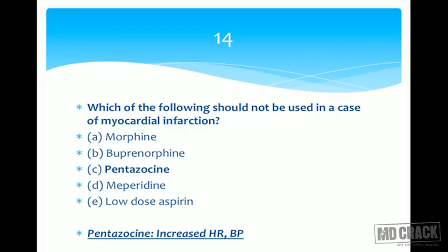Next question: acute intermittent porphyria is a contraindication for which? Options: opioids, benzodiazepines, barbiturates, non-benzodiazepines, and valproic acid. This is a very straightforward, commonly asked question. Barbiturates are inducers of microsomal enzymes, and this is why they can precipitate an attack of acute intermittent porphyria — a very strong contraindication. In your general anesthesia chapter on thiopentone sodium, you will find this listed as a contraindication. Answer: barbiturates.